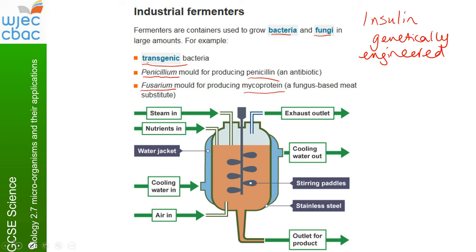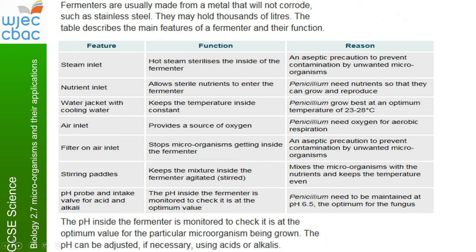See if you can use that diagram to start thinking about the labels that go on page 29. Each feature of the fermenter has a particular function — there is a very good reason why they have been designed this way. Fermenters are usually made from a metal that will not corrode, such as stainless steel or even copper, and they may hold thousands of litres. The table on this slide shows you the main features you need to know about, their function, and their reason.